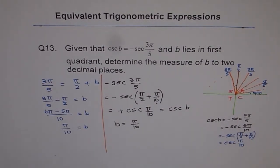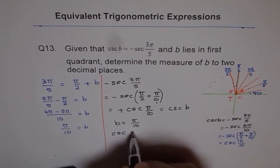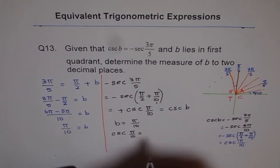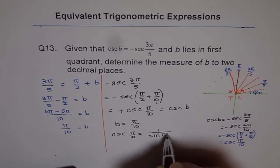Now the second part is to find the value of cosecant B to 2 decimal places. So for that, we can use calculator in radians. We want to find what is cosecant of π/10, which is 1 over sine of π/10.